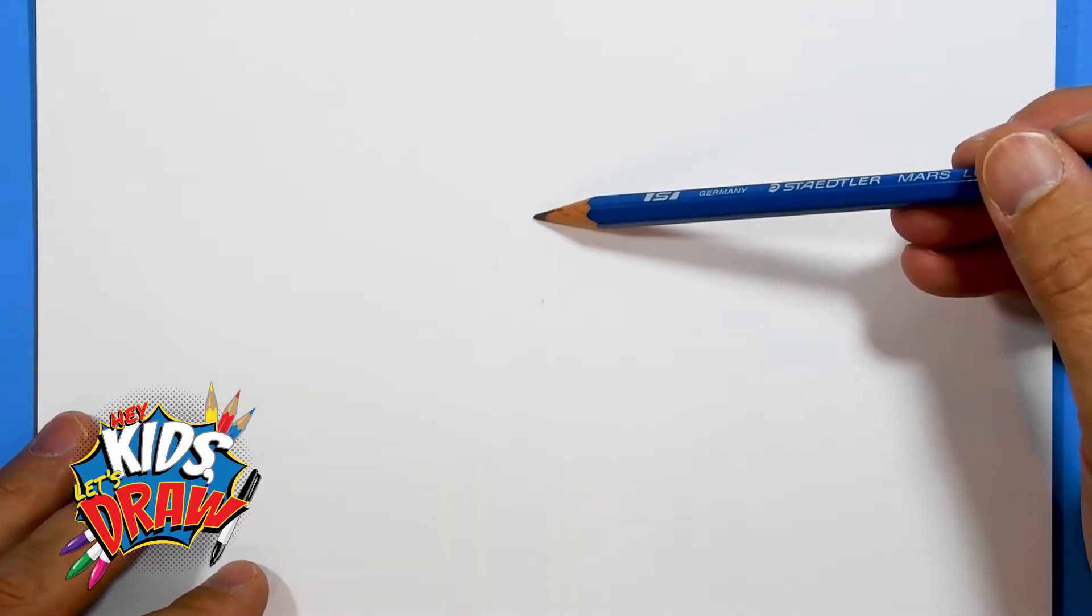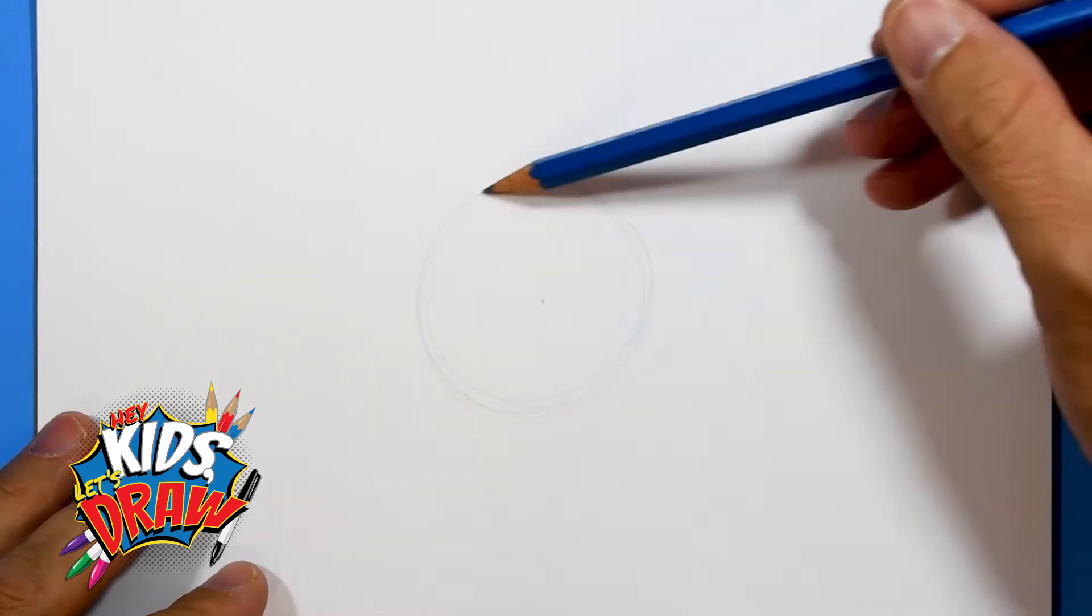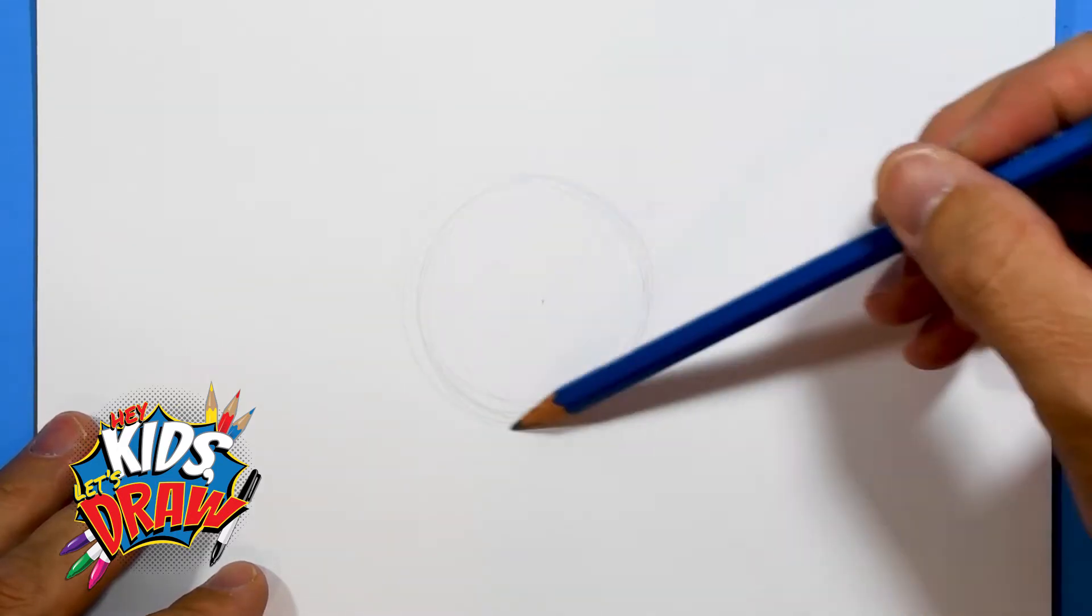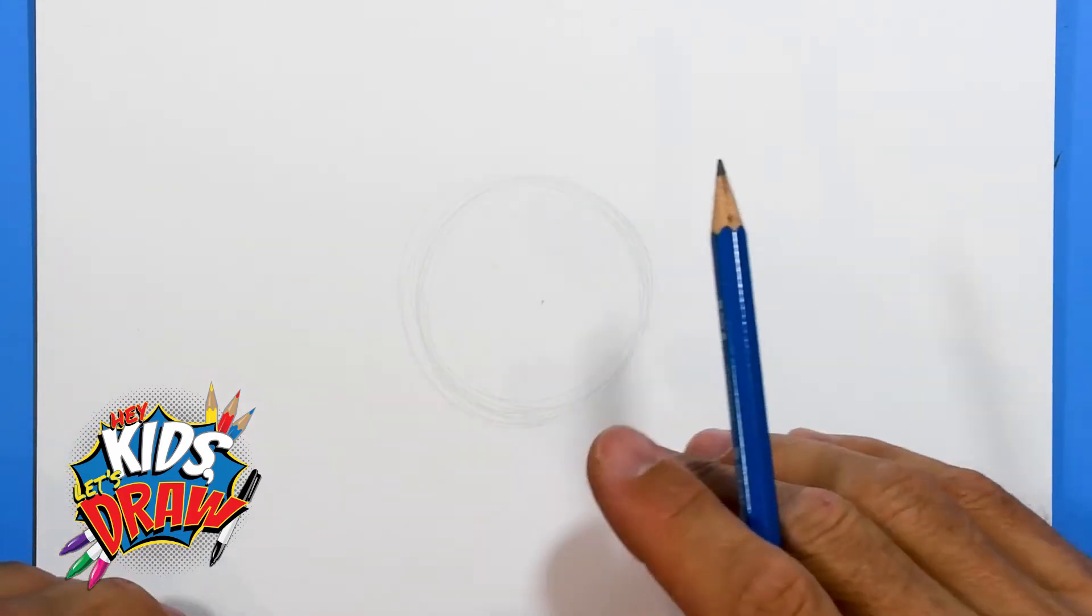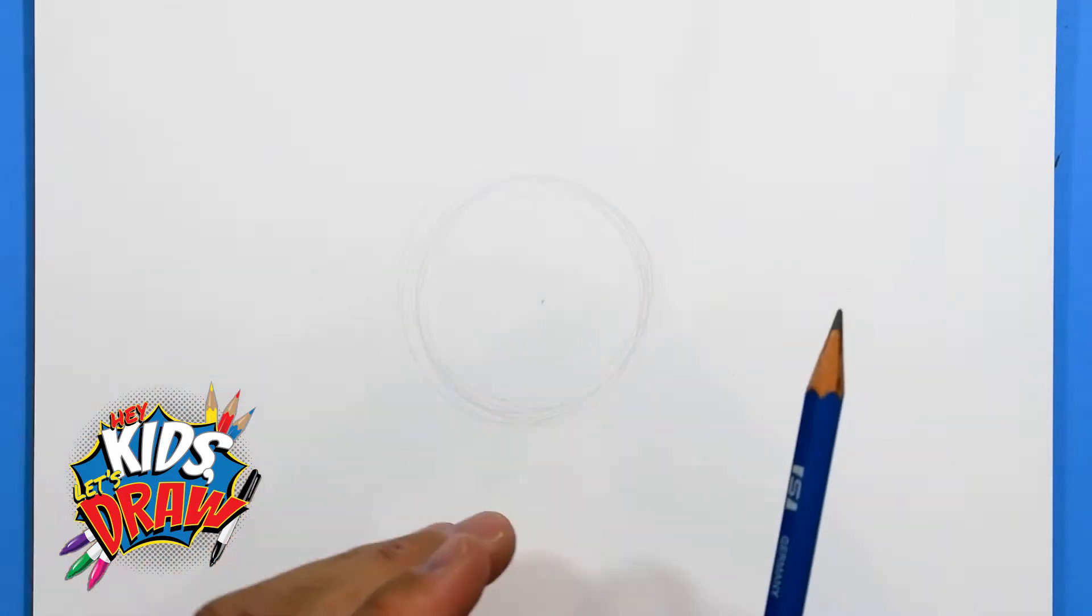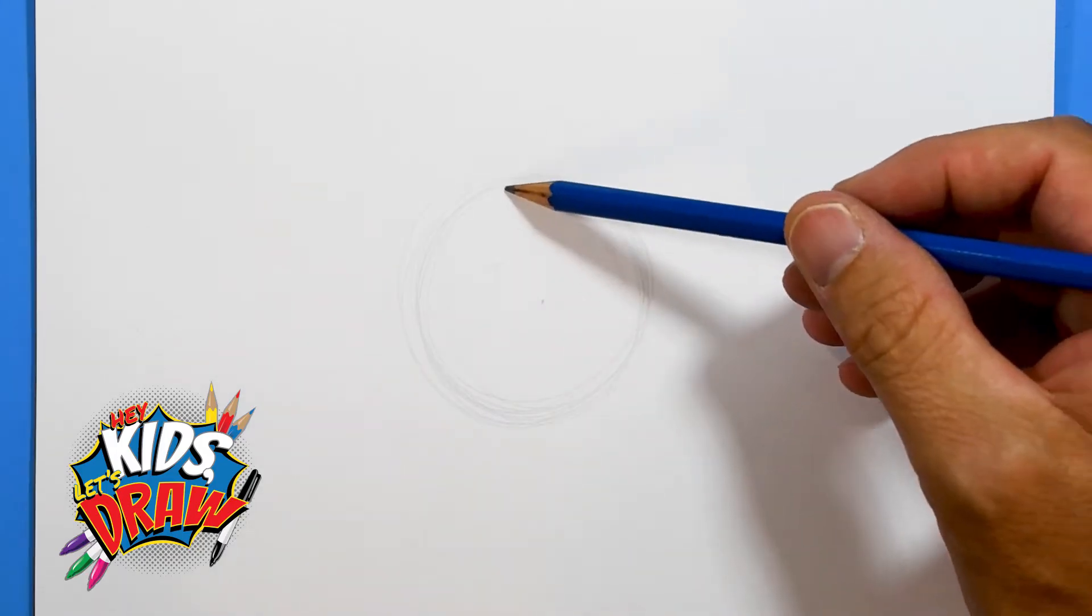Right here I'm gonna draw a circle, really light. I'm gonna go several times to get my basic shape. Why am I drawing a circle? Because underneath the skin of your face, your eyeball is a sphere, it's a circle.